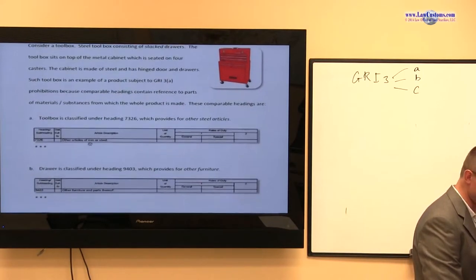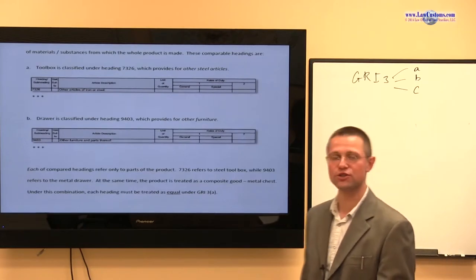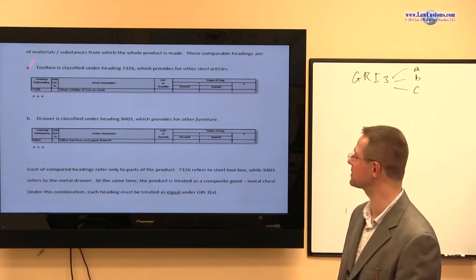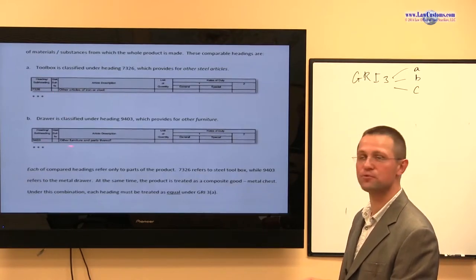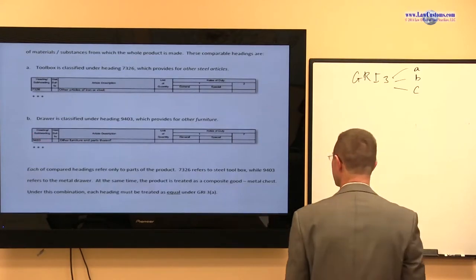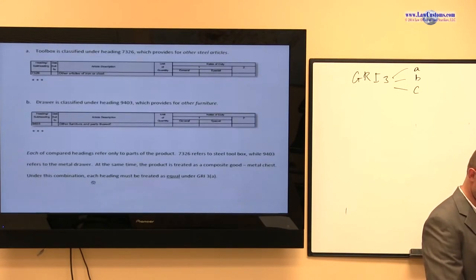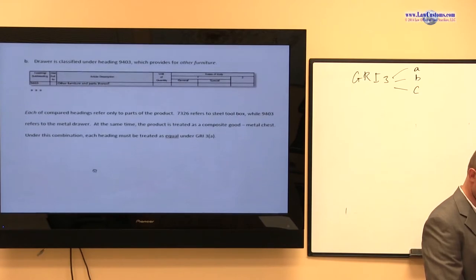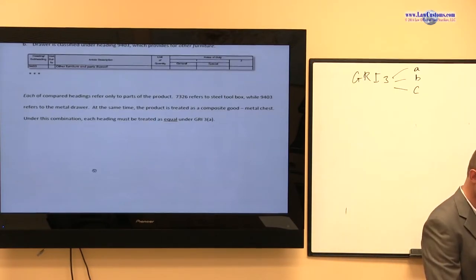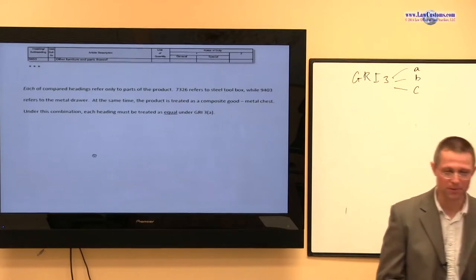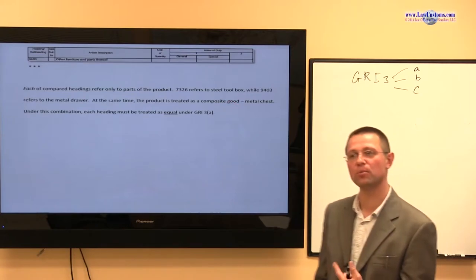They are classifiable under two different headings. So, you have a tool box, which is classifiable in chapter 73, heading 26, 73, 26, the one you carry. And the drawer is classifiable as furniture, steel furniture. So, the problem with GRI3, GRI3A, is because it's really like a composite good, it's like a set.